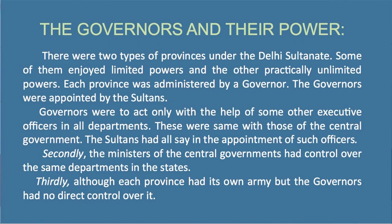Each province was administered by a governor. There were two types of provinces under the Delhi Sultanate — some enjoyed limited powers and others enjoyed partially unlimited power. The governors were appointed by the Sultan and were to act only with the help of executive officers in all departments, which were the same as those of the central departments. The sultans had final say in the appointments of such officers, and the ministers of the central government had control over the same departments in the states.